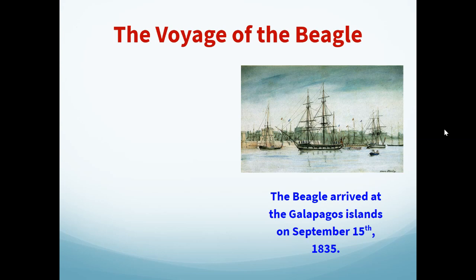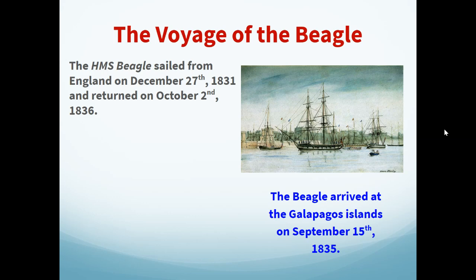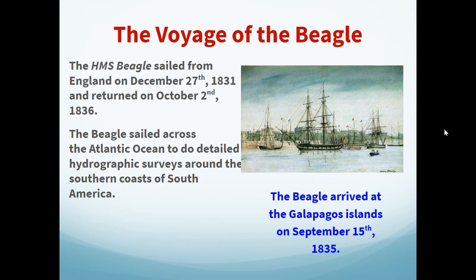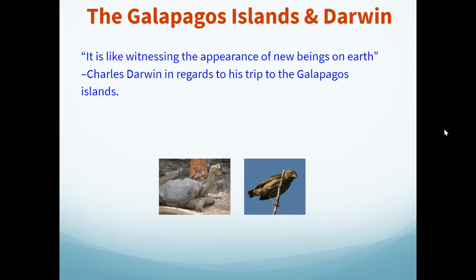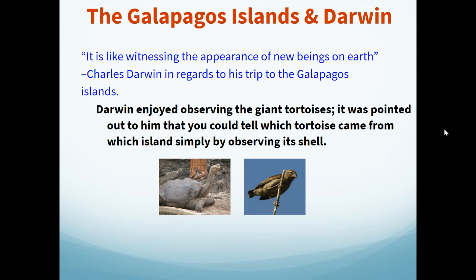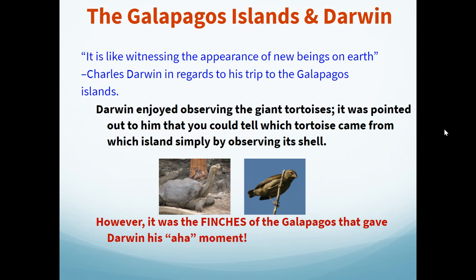When and how did he go about traveling to the Galapagos Islands? The HMS Beagle arrived at the Galapagos Islands around 1835, sailing from England. The Beagle sailed across the Atlantic Ocean due to detailed hydrographic surveys. It was the captain who actually invited Charles Darwin onto the voyage because Darwin was a naturalist. When Darwin arrived, he observed the giant tortoises and noted that you could tell which tortoise came from which island.